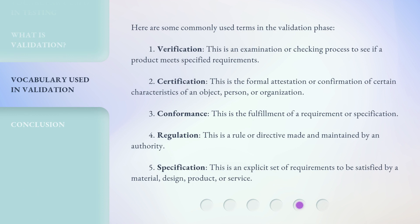Here are some commonly used terms in the validation phase. 1. Verification: This is an examination or checking process to see if a product meets specified requirements. 2. Certification: This is the formal attestation or confirmation of certain characteristics of an object, person, or organization. 3. Conformance: This is the fulfillment of a requirement or specification.